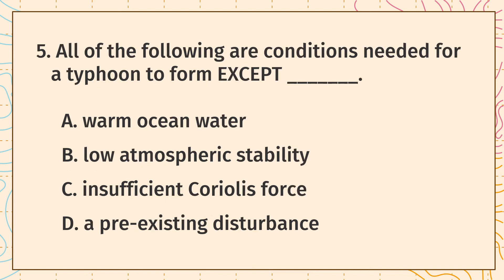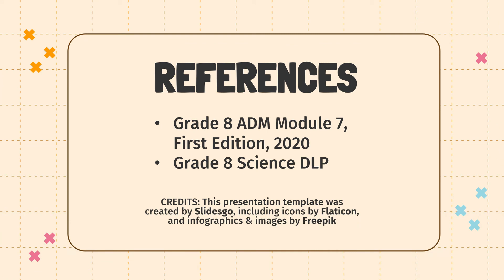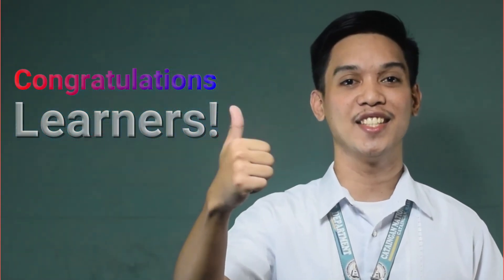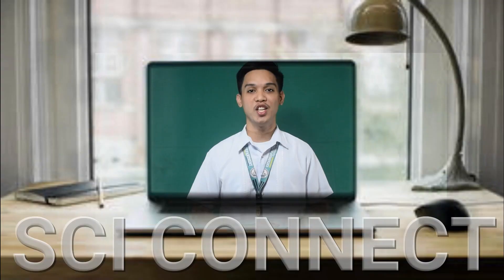Question 5: All of the following are conditions needed for a typhoon to form, except: A. Warm ocean water. B. Low atmospheric stability. C. Insufficient Coriolis force. D. A pre-existing disturbance. Here are the references used in this video lesson. Congratulations, learners, for finishing the video lesson! I hope you enjoyed learning with me today. Remember, learning is fun with SciConnect!